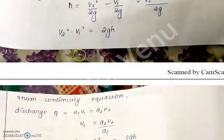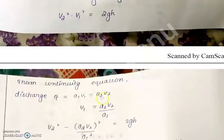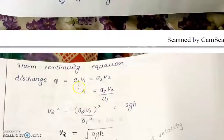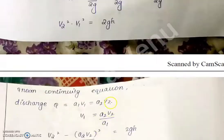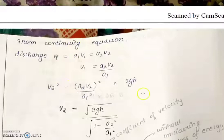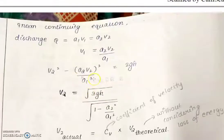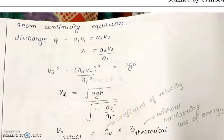Using the continuity equation, a1·v1 = a2·v2, so v1 = (a2·v2)/a1. Substituting this into the equation and extracting v2 gives: v2 = √(2gh) / √(1 − a2²/a1²).